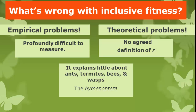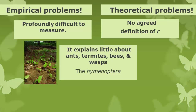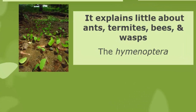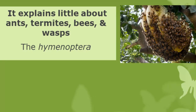For Wilson, probably the key issue was that inclusive fitness theory explained very little about ants, termites, bees, and wasps — those insects known as the Hymenoptera, which is Wilson's specialty, particularly the ants. On the left we see leafcutter ants on their way home with fragments of leaves, and on the right, a beehive. Wilson argues that for all the effort put into Hamilton's Rule, the empirical results have been mediocre, and that more has been learned through careful observation of ants, termites, bees, and wasps than through hypothesis testing. He's also argued that a more inductive approach starting with observations is called for.